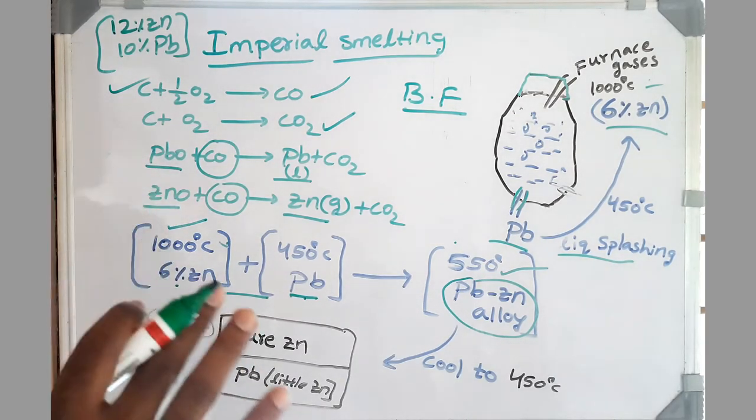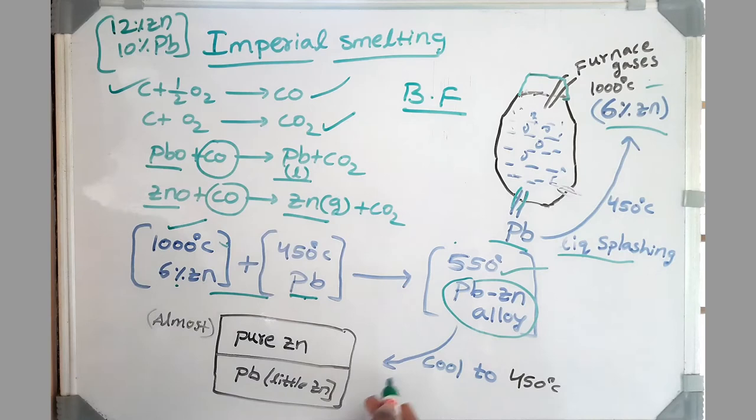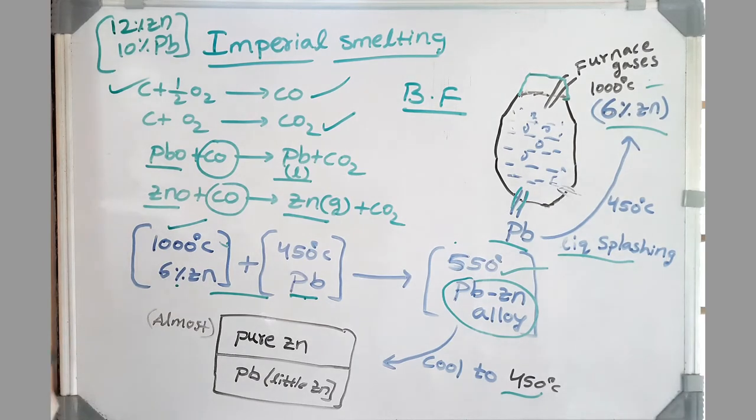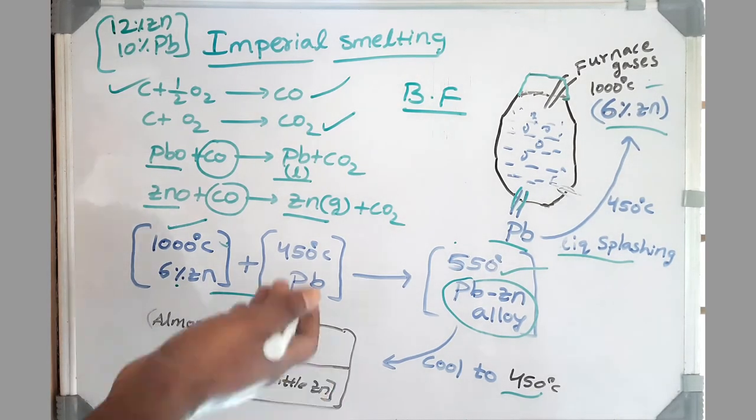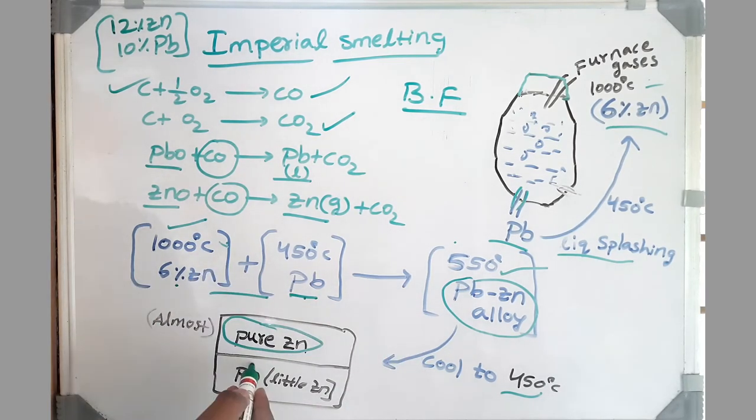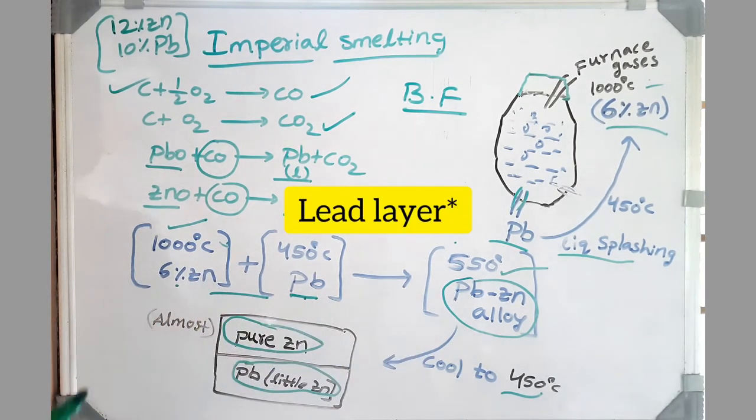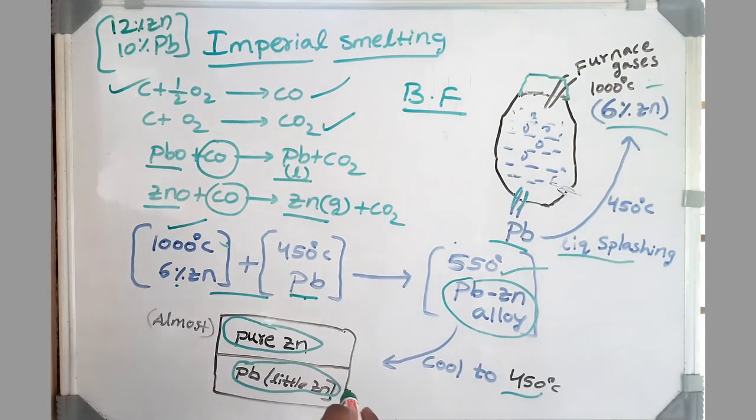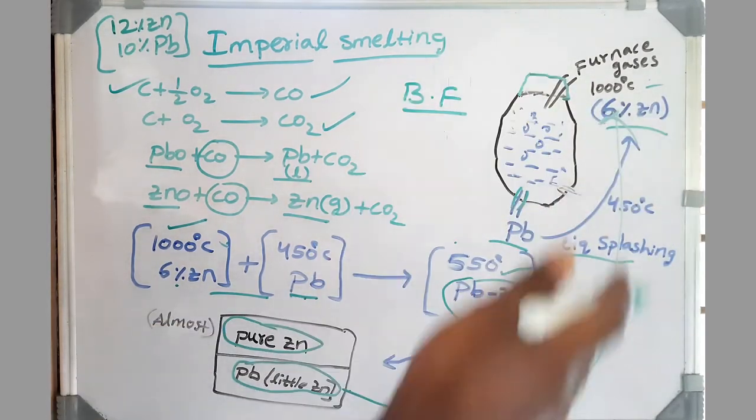Friends, if you look at lead-zinc phase diagram you understand this very well. If we cool it to 450 degrees centigrade, according to the phase diagram, the two phases that exist there are pure zinc and lead with the limited solubility of zinc. So these two layers form because of their densities. We get almost pure zinc layer and another layer with little zinc. This layer is being separated and this is again recirculated to the furnace gases.